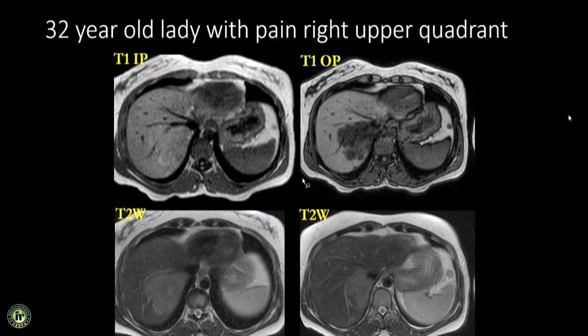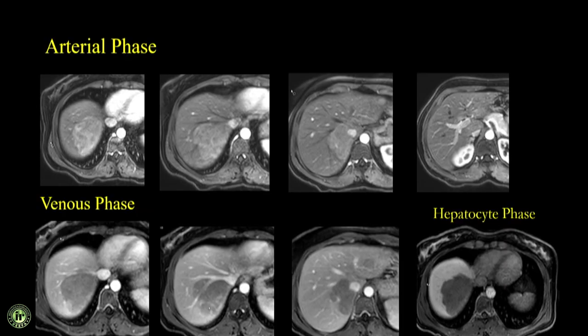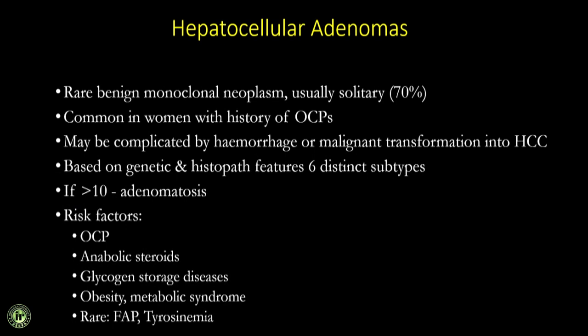The key finding here is the marked signal drop on the out-of-phase image, which suggests intravoxel fat. Increasingly we use the term intravoxel fat rather than intracellular fat, and that is seen in liver cell adenomas. This lesion with this set of findings is a liver cell adenoma — a rare lesion we don't see that often. It is commonly seen in women in the reproductive age group on oral contraceptives. If there are more than 10 lesions in the liver it is referred to as adenomatosis. It is also seen in glycogen storage disease and in patients on anabolic steroids.